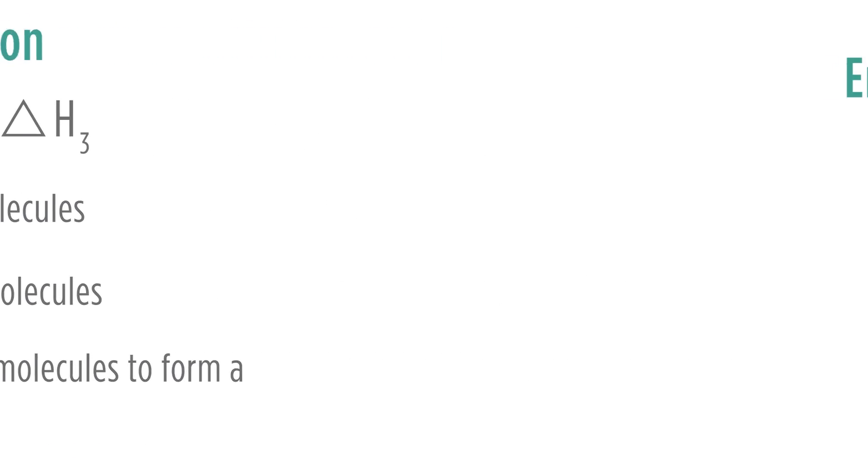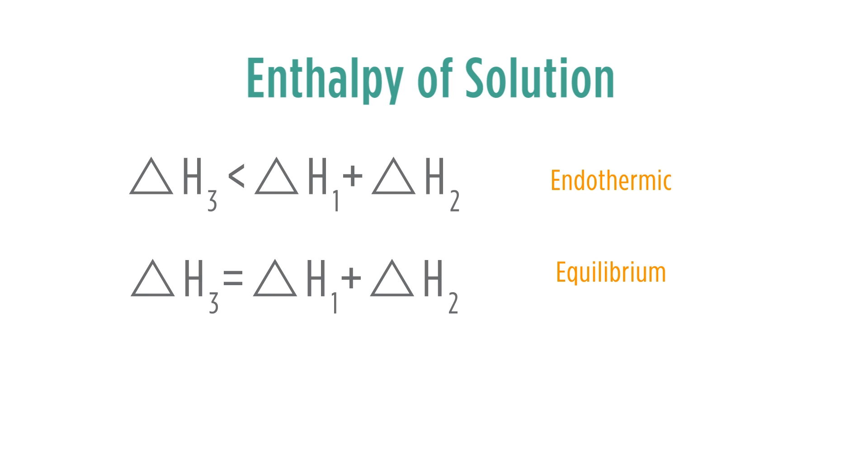So therefore we can think about the enthalpy of solution as one of these three possible cases. If delta H3 solute and solvent interactions is less than that of the enthalpy for the solute-solute and the solvent-solvent, then that will be endothermic. If delta H3 is equal to delta H1 plus delta H2, then that will be in an equilibrium. And then if delta H3 is greater than delta H1 plus delta H2, then that will be exothermic.